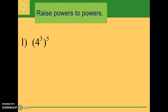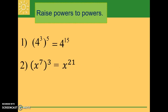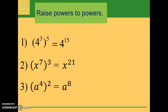Example one: four to the third raised to the fifth power. We multiply three and five and we have four to the fifteenth power. Example two: x to the seventh power raised to the third power. We multiply the exponents and we have x to the twenty-first power. Example three: a to the fourth power raised to the second power. We multiply four and two and we have a to the eighth power.